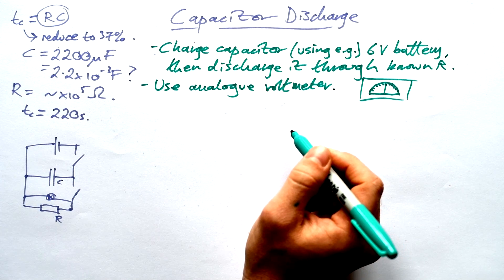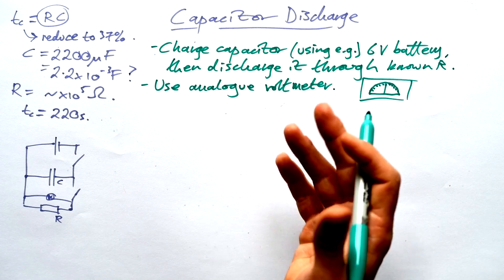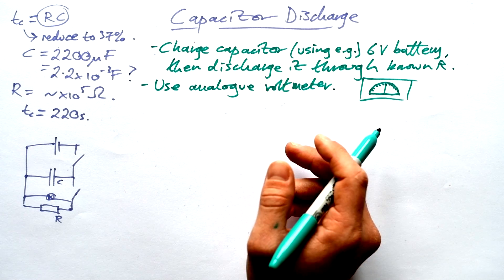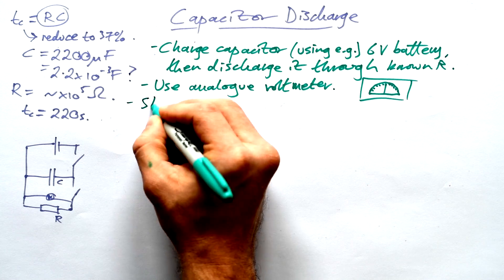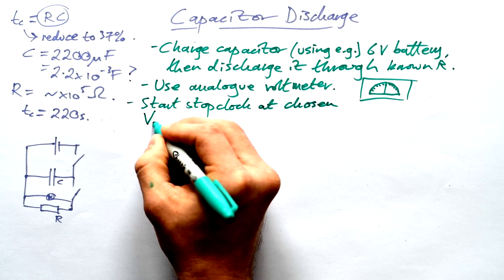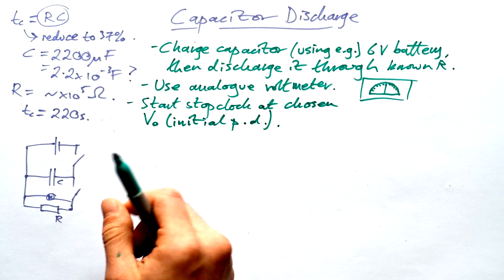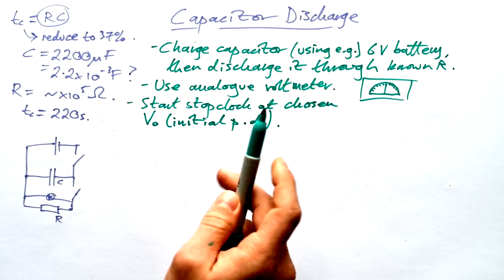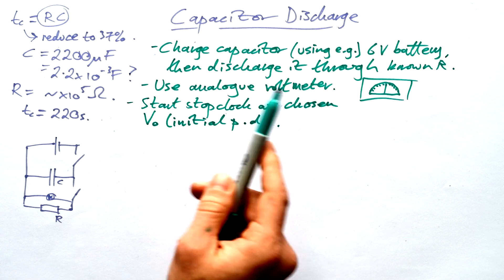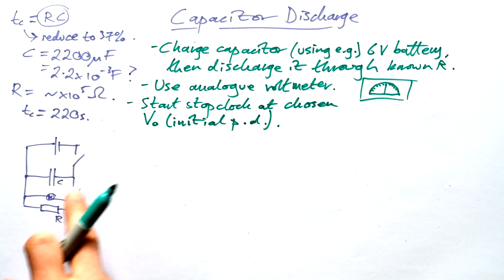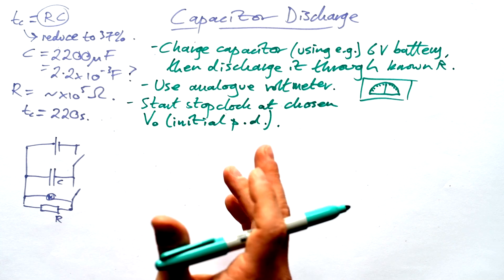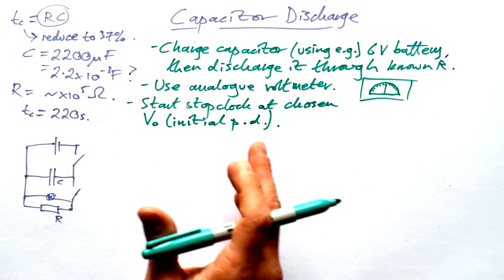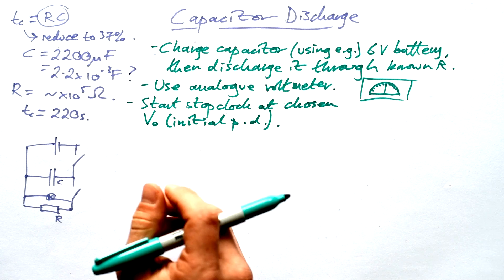The problem with digital voltmeters in this case is that they're not constantly updating. It's only every second or so that the numbers update. And we're going to start a stop clock at chosen V0. That's our initial PD. Now you can choose a number that's going to be the same every time if you want to. You can start discharging it. You don't need to start your stop clock as soon as you start discharging it. You can start discharging it and then start your stop clock when the PD reaches 5 volts, for instance. It doesn't make a difference.